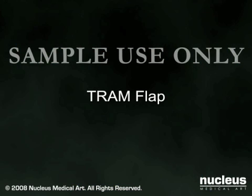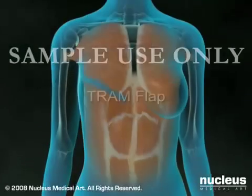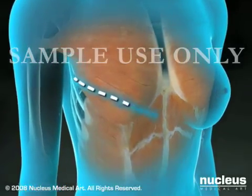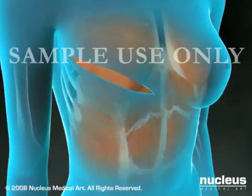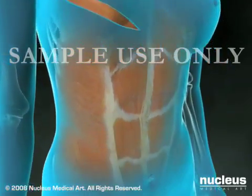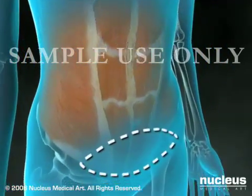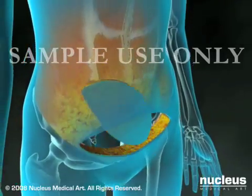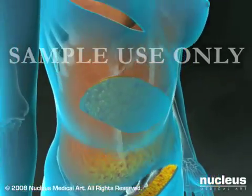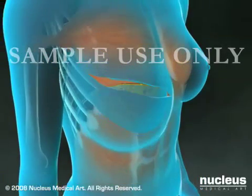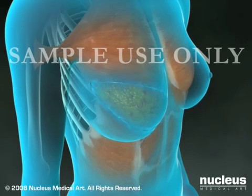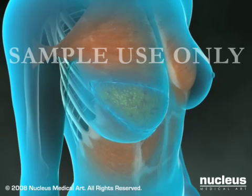A transverse rectus abdominis myocutaneous flap, or TRAM flap, begins with your surgeon making an incision in the skin of the chest. Next, he or she will make an elliptical incision in the skin, fat, and muscle of your abdominal wall, or, if there's not enough tissue in the abdomen, in your lower back. The surgeon will then slide the tissue beneath your skin to the mastectomy site to form a breast mound. Great care will be taken to preserve the blood supply to the reconstructed mound.